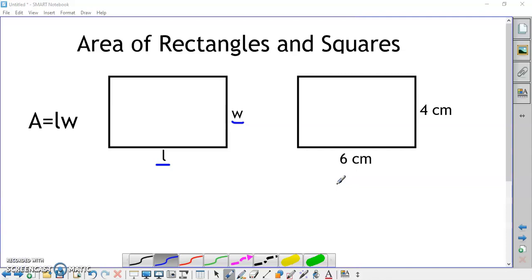Let's look at this rectangle. The length is 6 centimeters and its width is 4 centimeters. Using the formula with L equal to 6 centimeters and W equal to 4 centimeters, A is equal to 6 centimeters times 4 centimeters, which equals 24 square centimeters.